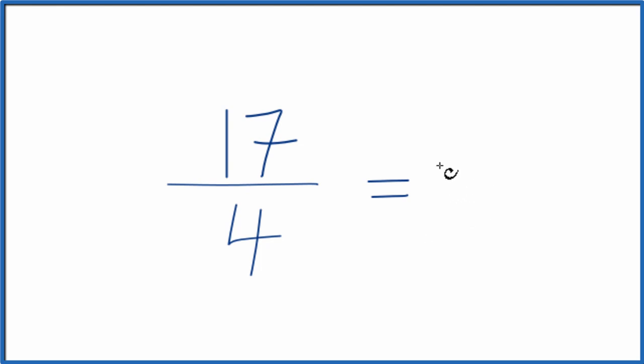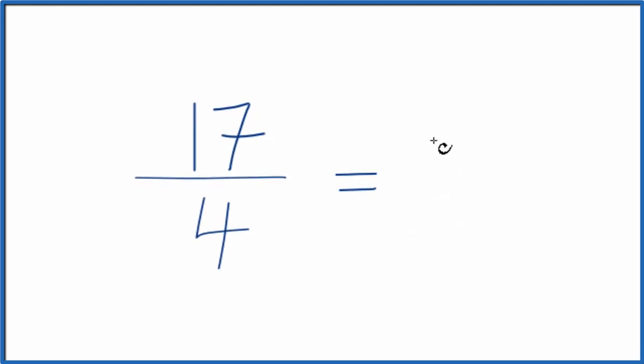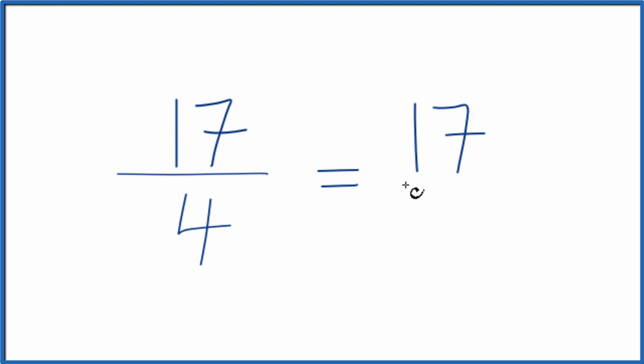That's our greatest common factor. And if we divide 17 by 1, we get 17. If we divide 4 by 1, we get 4. So this fraction, 17 fourths, it's already simplified. It's in lowest terms.